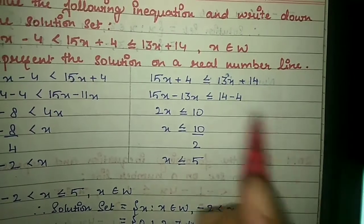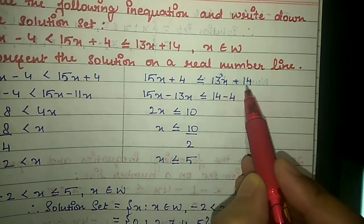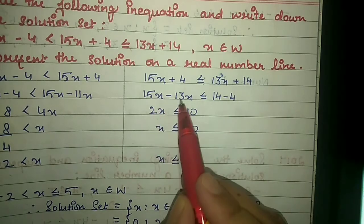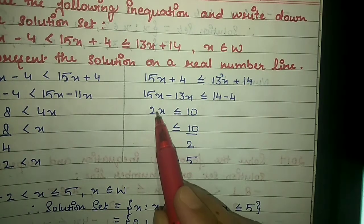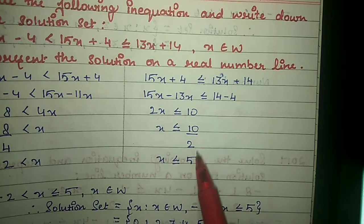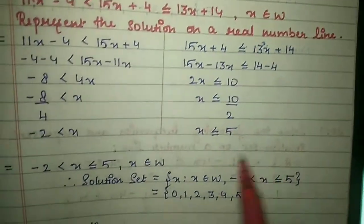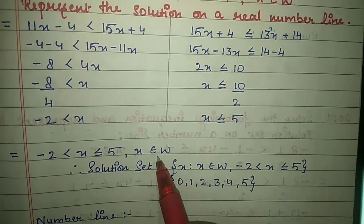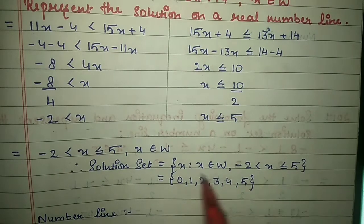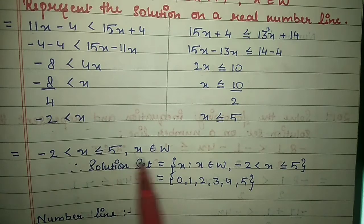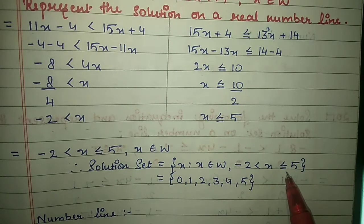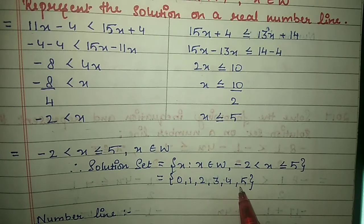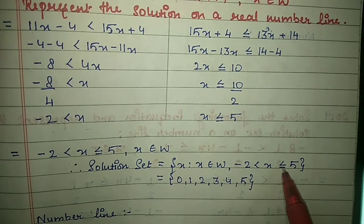Take the second half: 15x + 4 ≤ 13x + 14. Shift 13x to the left and 4 to the right. You get 15 minus 13 = 2x ≤ 10. Shift 2 across: x ≤ 5. Joining both: minus 2 < x ≤ 5, x belongs to whole numbers. Write solution set in flower brackets. The whole numbers between minus 2 and 5 are 0, 1, 2, 3, 4, and 5 — we include 5 because the equal to symbol is present.